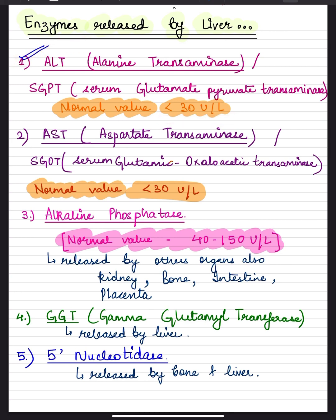The second one is the AST which is known as aspartate transaminase, formerly known as serum glutamic oxaloacetic transaminase. Normal value is less than 30 units per liter. This one is not liver specific as it is released by the cardiac as well as the skeletal muscles.